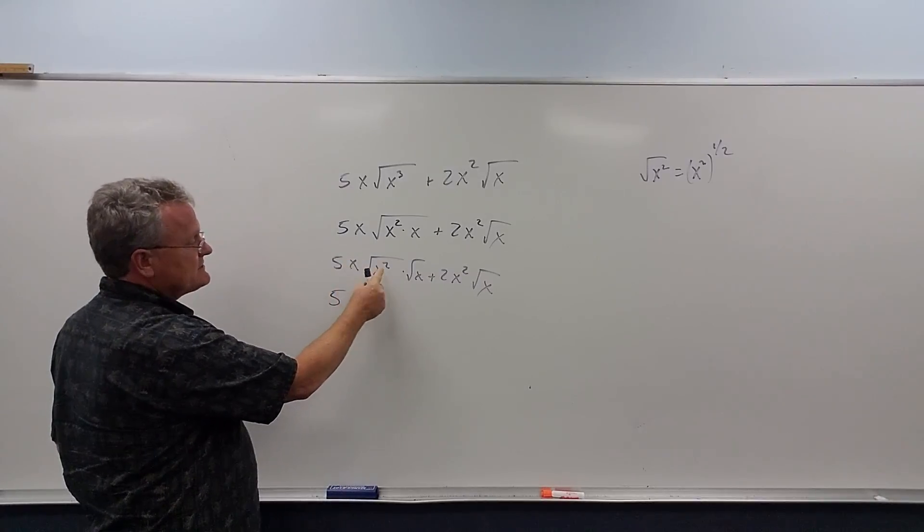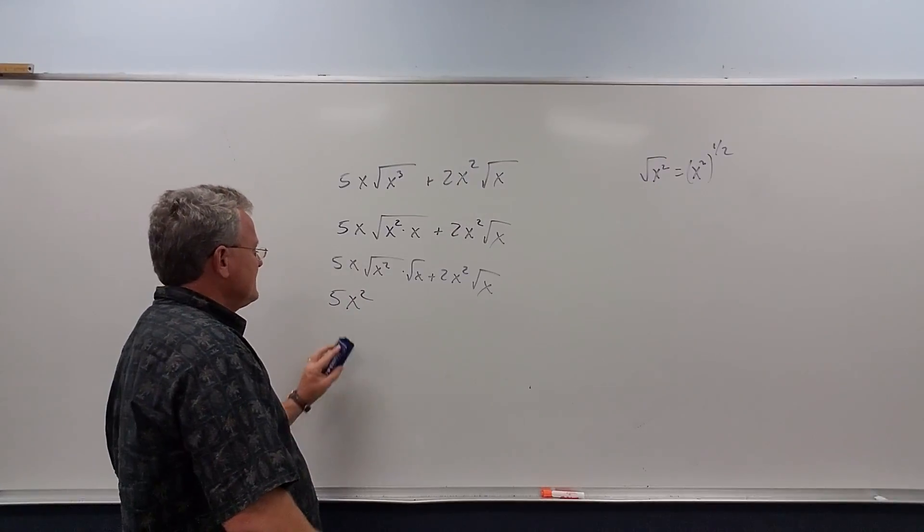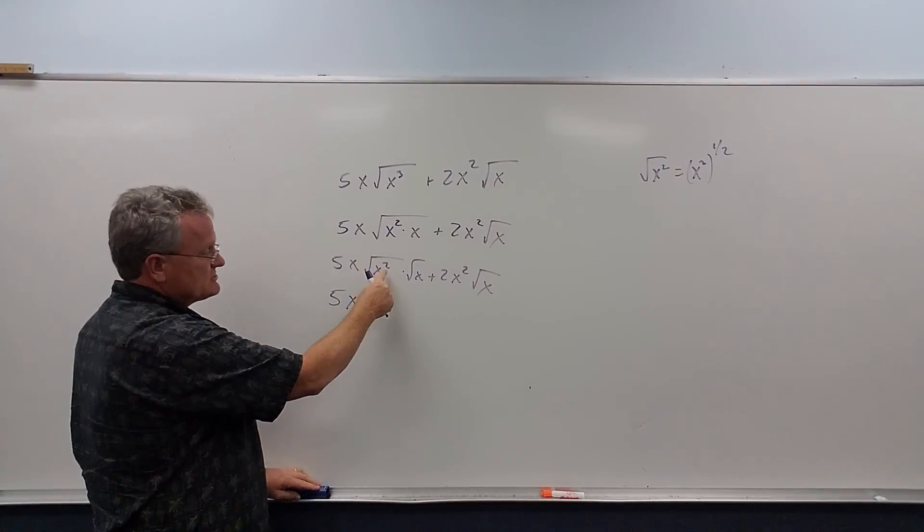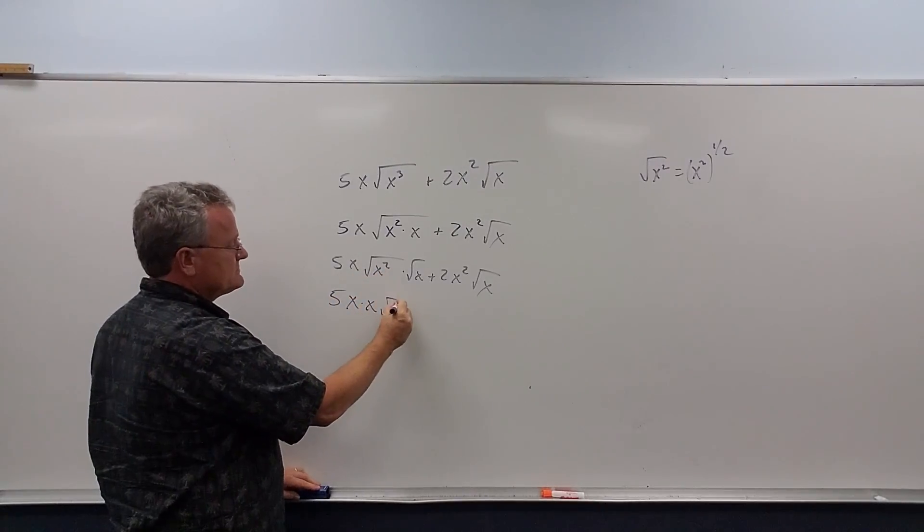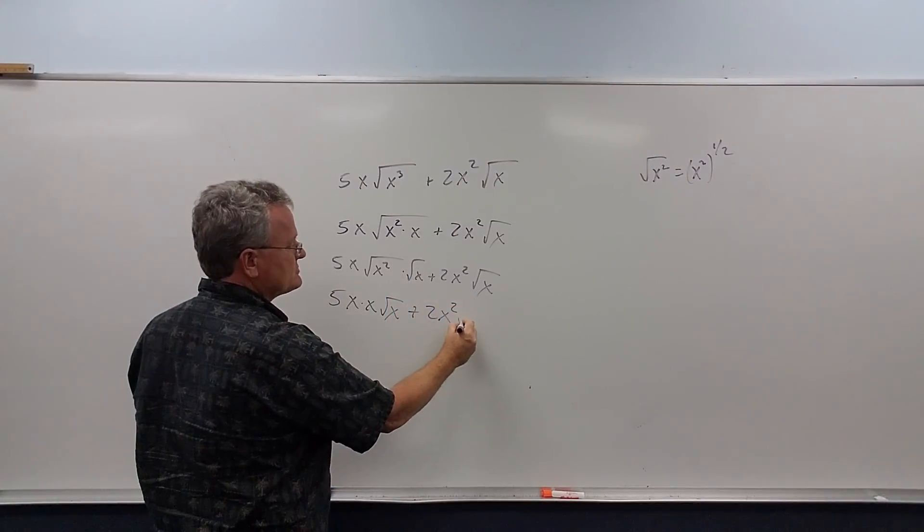We get 5x times x is x squared. I'll do it step by step. So this is x. The square root of x squared is x. Bring your radical down. Here we have 2x square root of x.